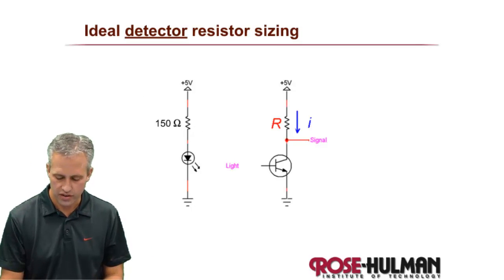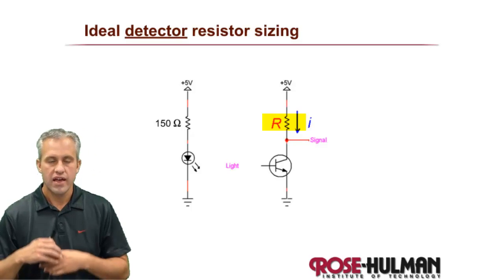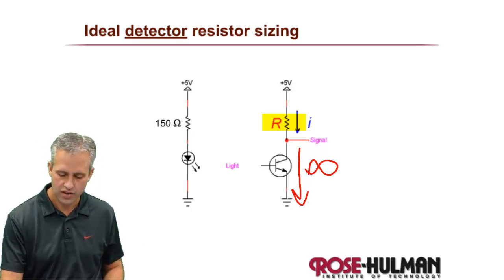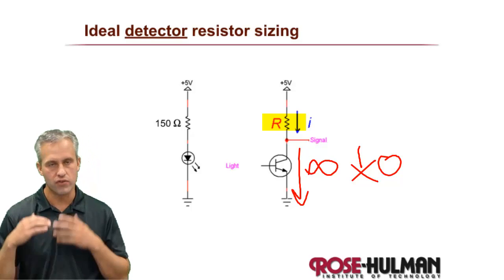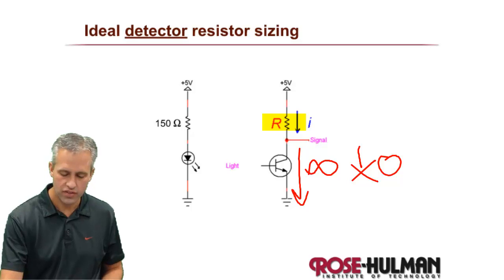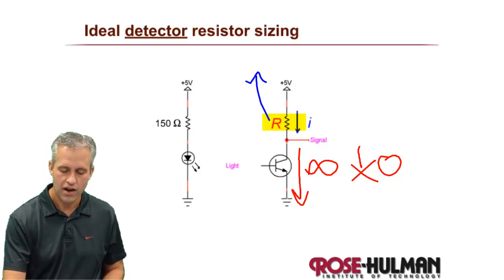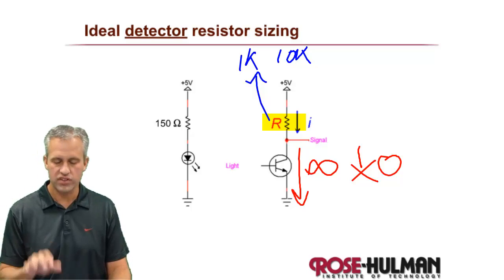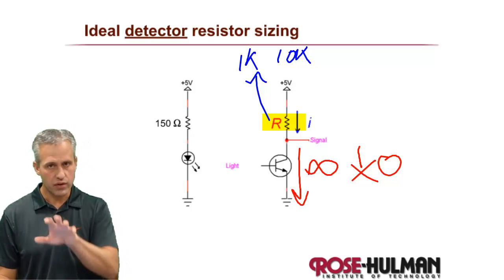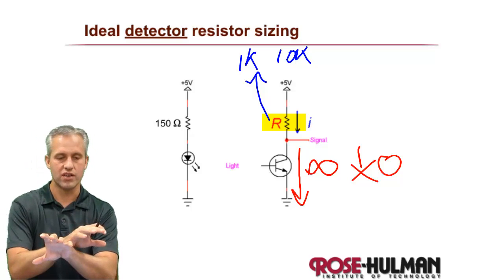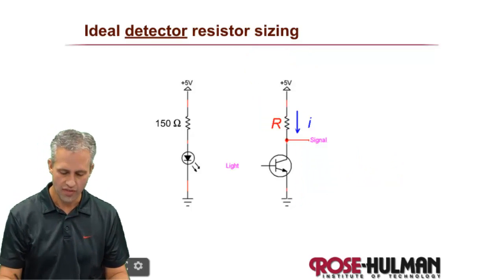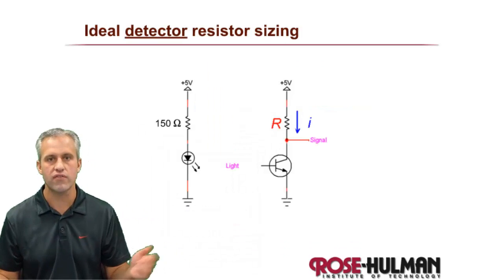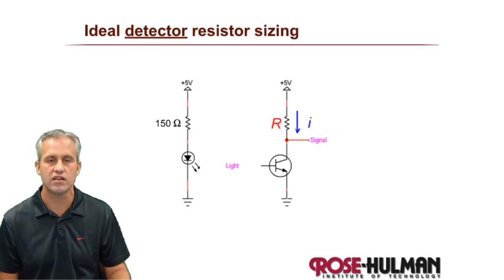For the detector resistor sizing: theoretically the BJT would pass infinite current in light and zero in darkness, so any resistor value would work — something like 1k or 10k. But to actually size it well, you have to make a theoretical guess and then do an experiment to see if you need to tweak it. It's a more complex topic, so we'll save that for the next video lecture. See you then when we talk about the specifics of sizing that detector resistor.